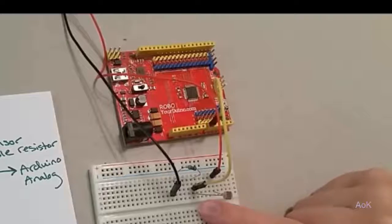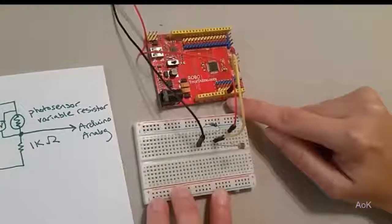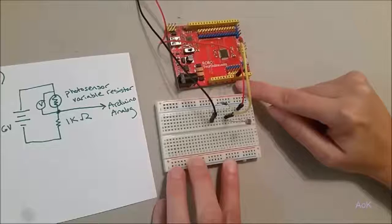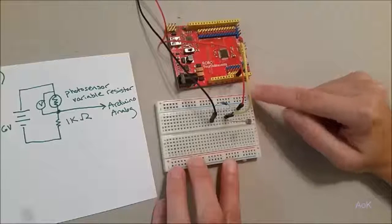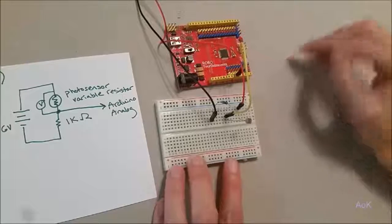As the voltage drop changes, you will get different values in your serial monitor of your Arduino. The values can range anywhere from 0 to 1023. This represents the bottom level and highest level of the voltage drop that you could possibly get.